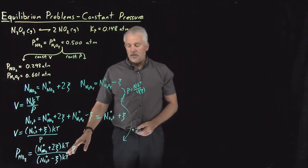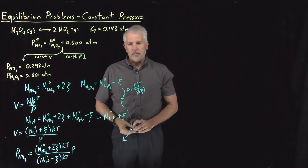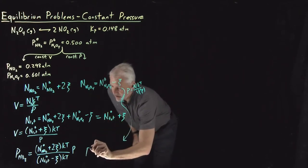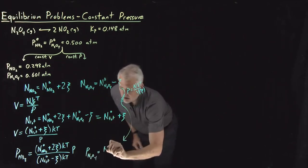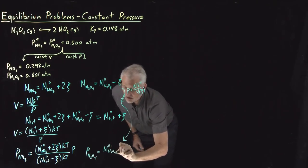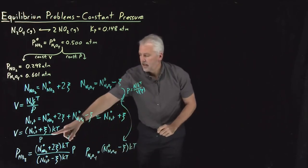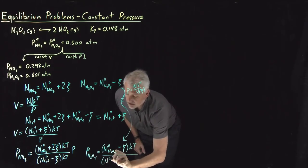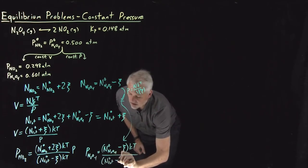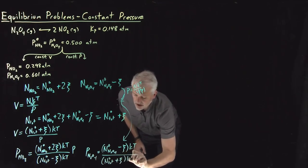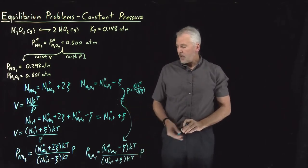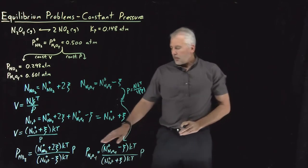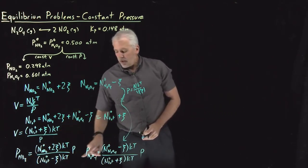Notice that's a little more complicated than in the previous example where we didn't have to worry about the volume changing. Likewise, the expression for N2O4 is going to be molecules of N2O4 initial minus squiggle times KT, divided by initial moles for the whole system plus squiggle times KT over P. So that P in the denominator of the denominator again moves up to the top. That took a little more work, but now we have expressions for partial pressures of reactants and products.